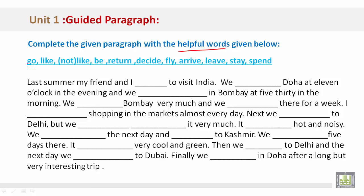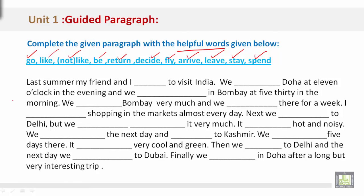Let's take a look at each one. We have: go, like, not like — which is negative — the verb 'be', return, decide, fly, arrive, leave, stay, and spend. It is very important that you decide which blank each of these words would go into. You may not use all of them. We will now begin the guided paragraph.